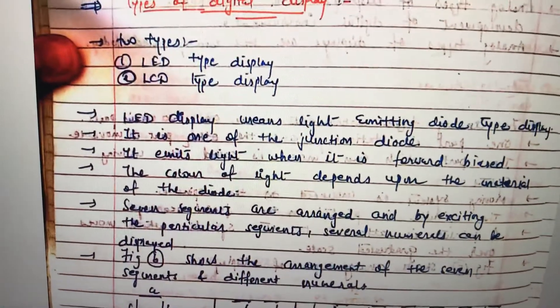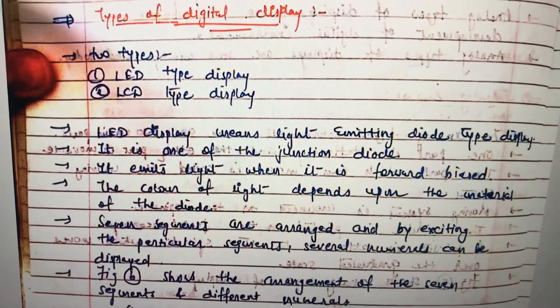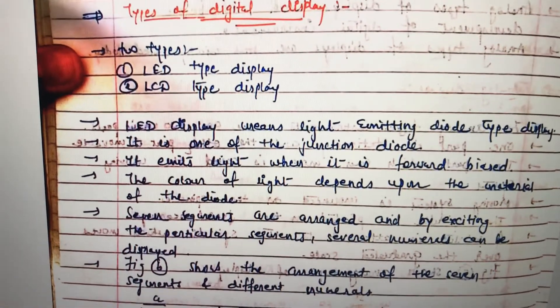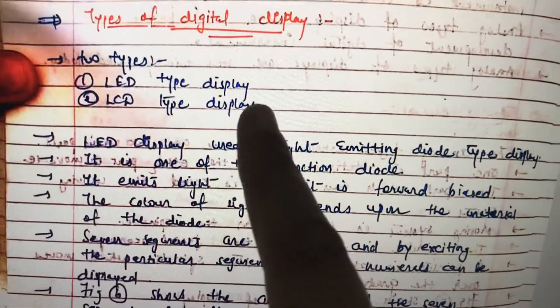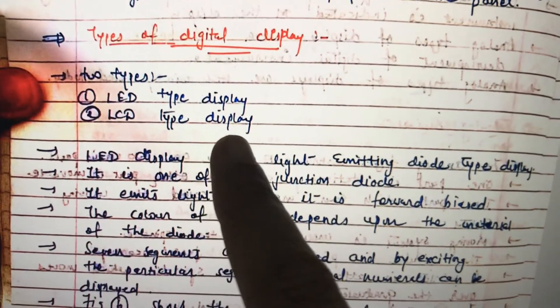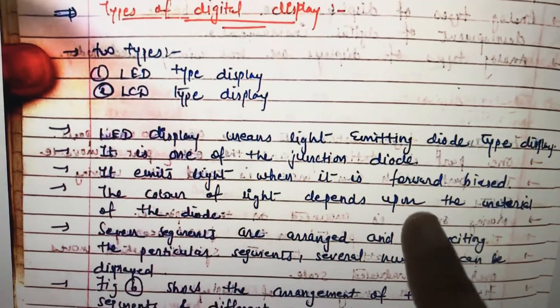We know basically two types of digital displays. First is LED type display and second is LCD type display. Let's go with the full name of LED and LCD. LED, that is Light Emitting Diode type display, and LCD, that means Liquid Crystal Display type of display.